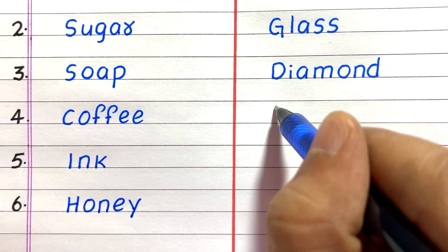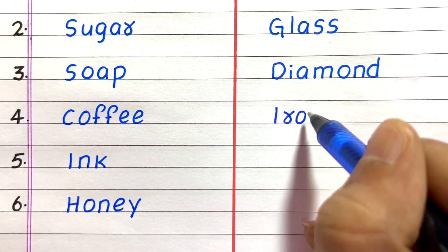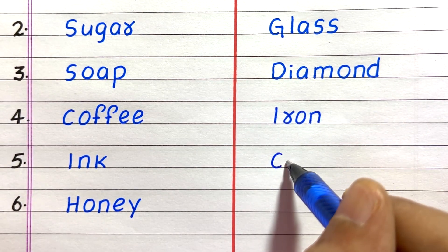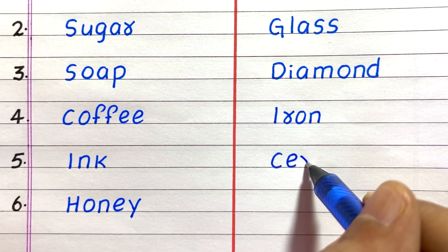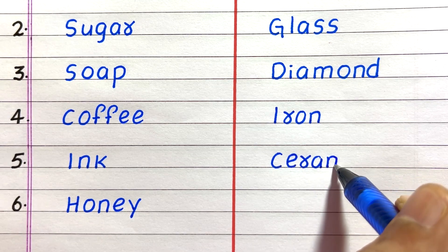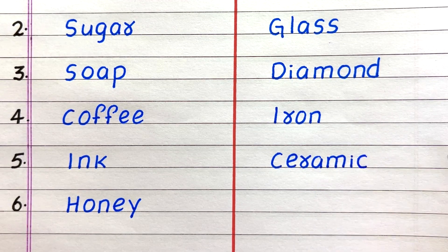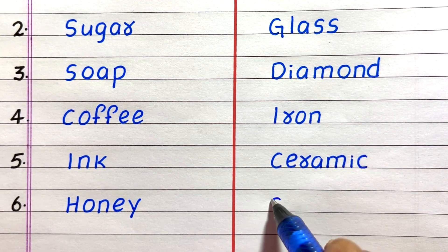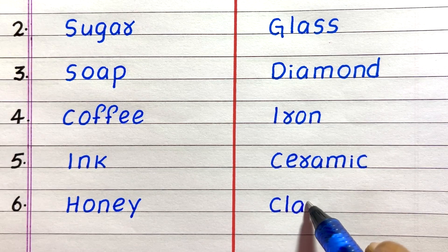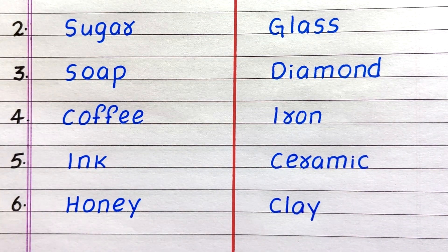Fourth example of an insoluble substance is iron. Fifth, ceramic. Sixth, clay.